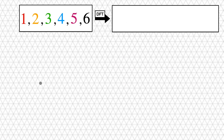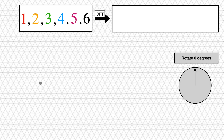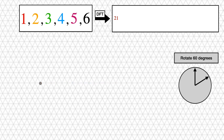Let's do one more example: the DFT of 1, 2, 3, 4, 5, 6. In the previous example we rotated by 90 because we had four points and 360 ÷ 4 = 90. Now we rotate 60 degrees because 360 ÷ 6 = 60. We start by rotating zero degrees first, put them all together, and the point at the very end is 21 — that's the first element of our DFT. Notice that the first element of the DFT is always the sum of all numbers in the sequence. Now we rotate 60 degrees and we get the following drawing because every segment is rotated 60 degrees from the previous one.